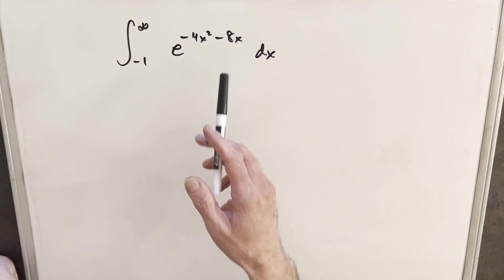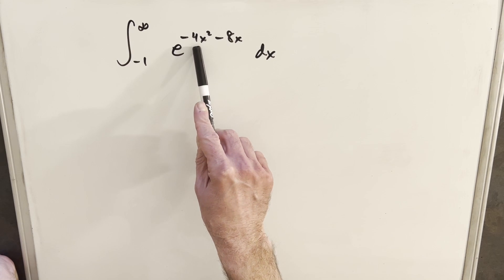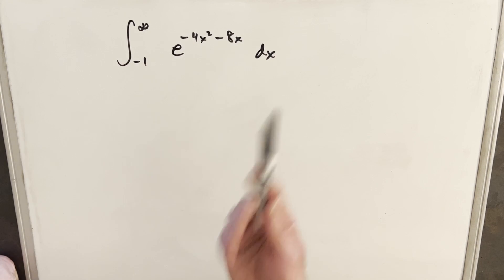This exponent makes me think of the Gaussian integral just because we have a square term here, but it's a little unusual to have a coefficient in front. It's not just x squared, and we have this other part. That's a potential problem. We would like our bounds on the Gaussian integral to be 0 to infinity. I'm not sure how we're going to deal with minus 1.